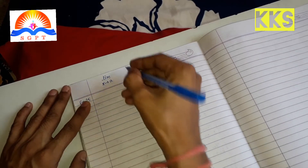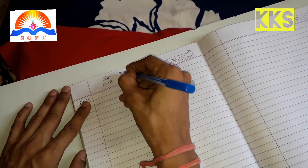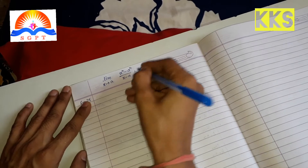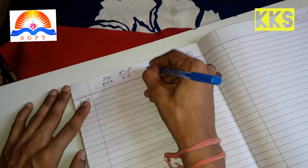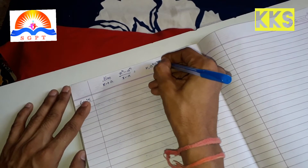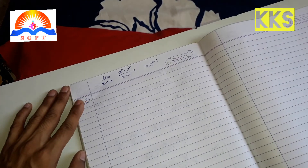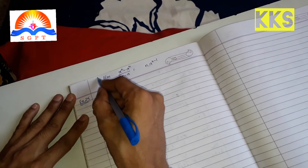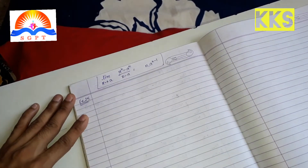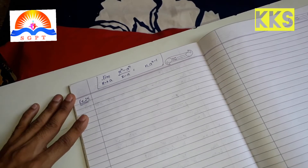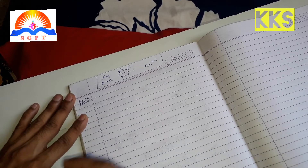इन short questions के लिए formula है: limit x→a of (x^n - a^n) / (x - a) = n · a^(n-1)। यह formula हमको follow करना है आने वाले सभी questions में।